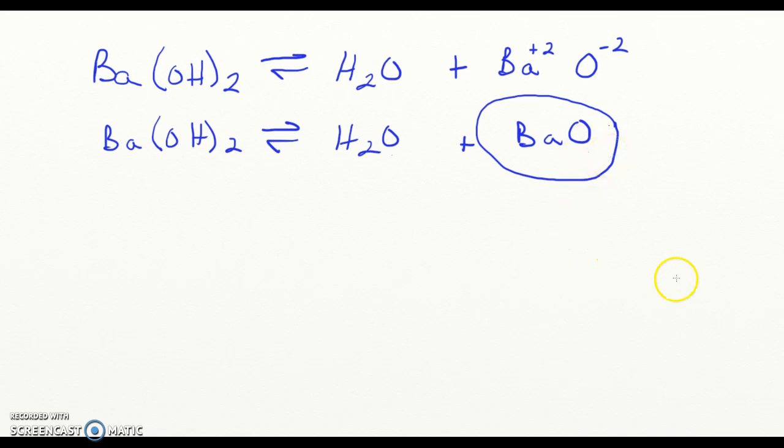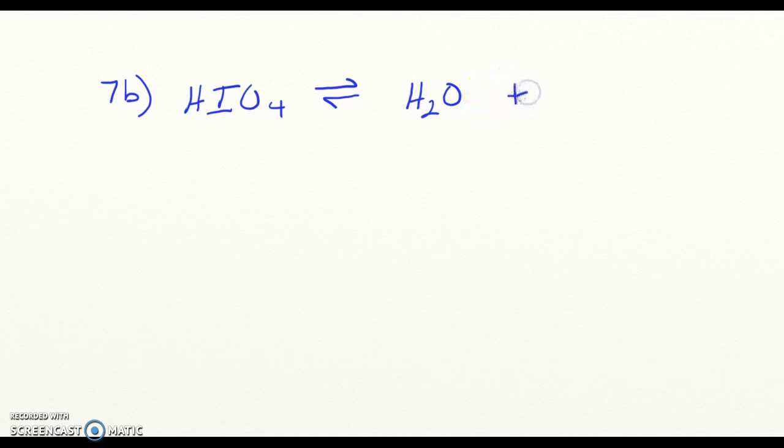Let's try it for the acid anhydride. So we start off with this acid. And I said this one is going to be kind of a difficult one, so I'll do it here in class. So this is 7B right here. It says HIO4. And what we're going to do first is we're going to put water, H2O.